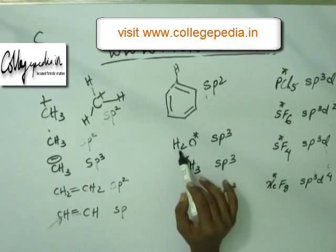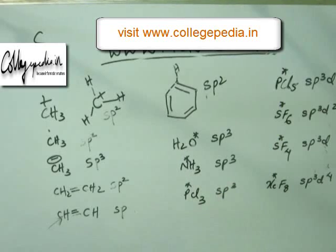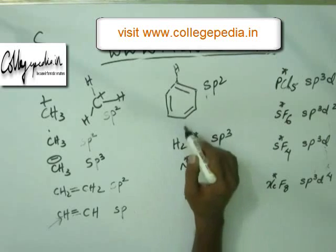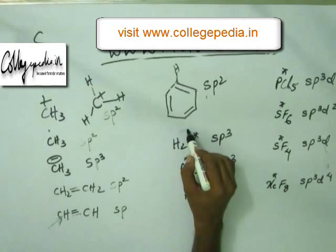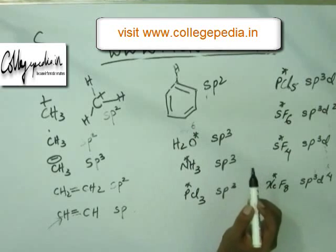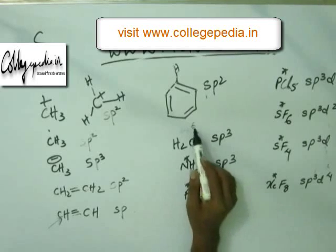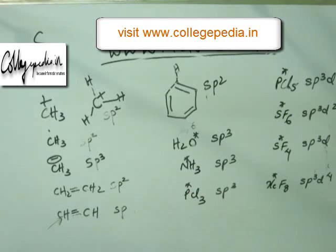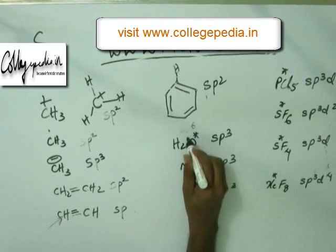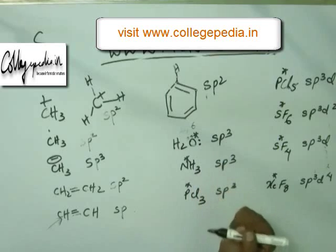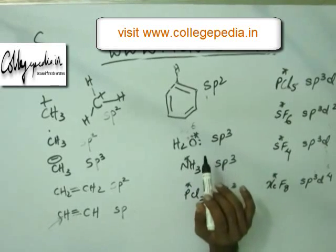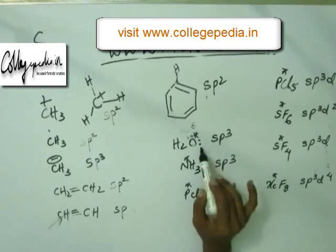If you look at oxygen making two bonds with hydrogen, you might be tempted to write the hybridization as sp. The electronic configuration of oxygen by the Bohr model is 2, 6 — the outermost shell has six electrons. Two electrons are used to make the two bonds with hydrogen, leaving four electrons, which exist as two lone pairs. Those two lone pairs must be kept in hybridized orbitals to minimize electronic repulsion.